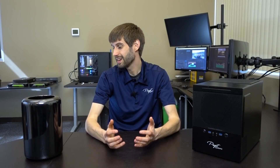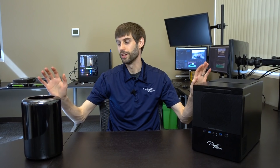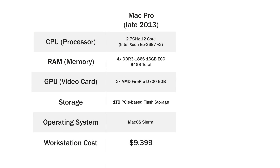Let's talk about the hardware that's in both of these machines. On the Mac Pro side, we have the top-of-the-line Mac Pro from late 2013. It has a 12-core 2.7GHz processor, 64GB of DDR3 ECC RAM, dual AMD FirePro D700 video cards, a 1TB PCIe-based flash storage drive, and it's running the latest Sierra operating system. If you were to purchase this through Apple.com, the system comes in at $9,399.